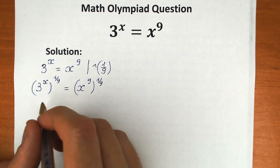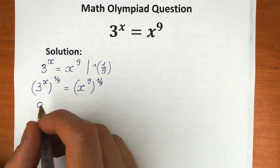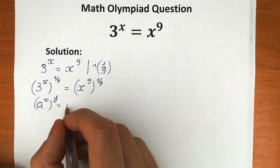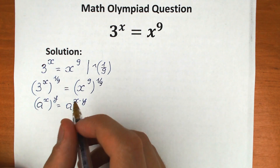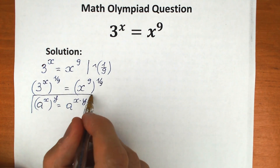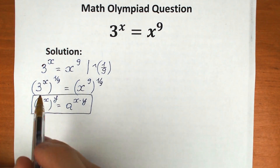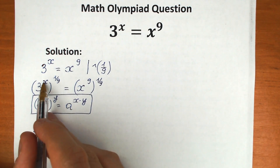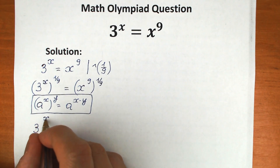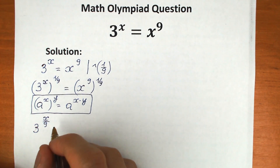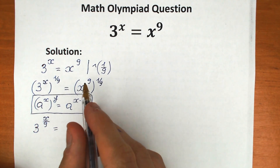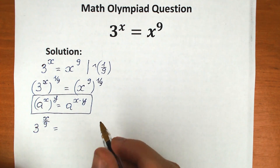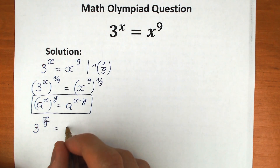Because if you know a little bit about power rules, here is the rule we really need: if we have a to the power x raised to the power y, this equals a to the power x times y. Applying this rule, we get 3 to the power x over 9. And on the right side, x to the power 9 raised to the power 1 over 9 gives us just x, because 9 times 1 over 9 equals 1.